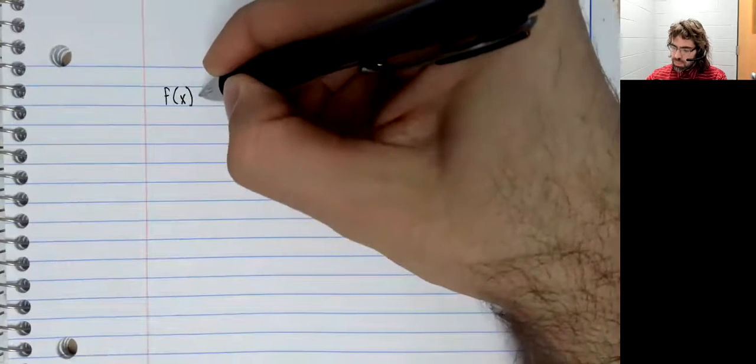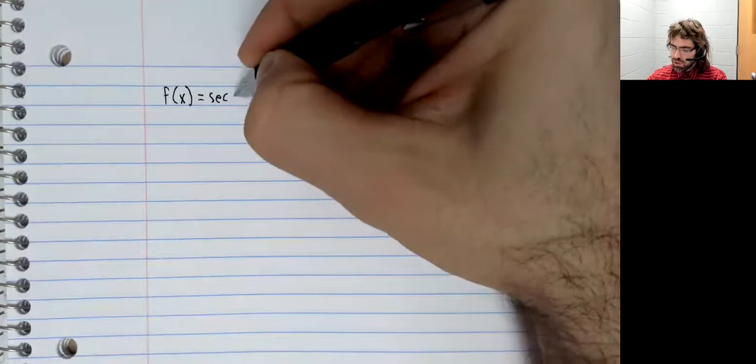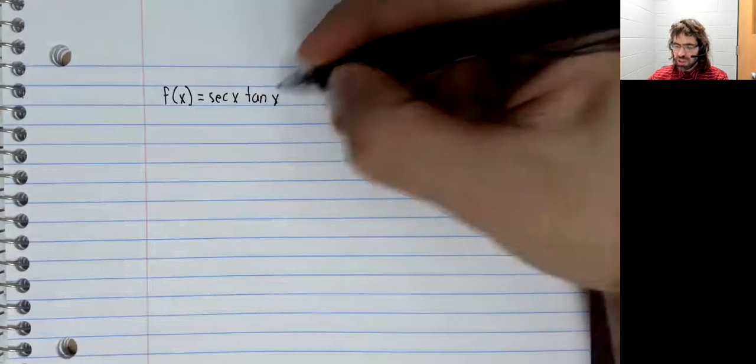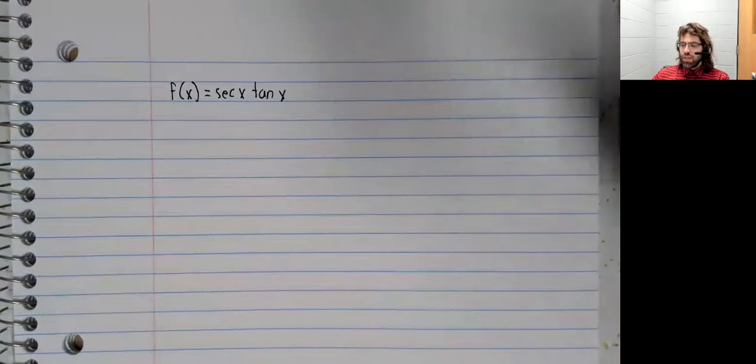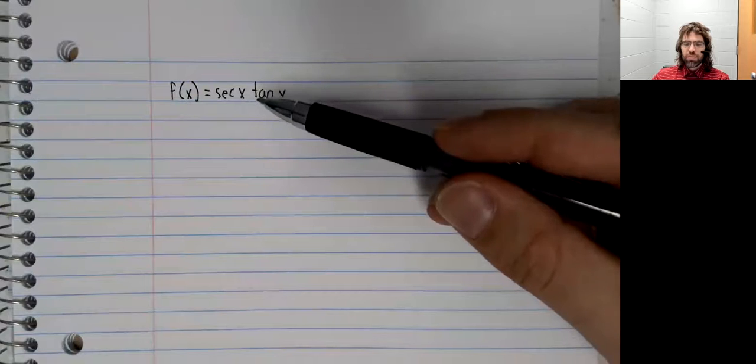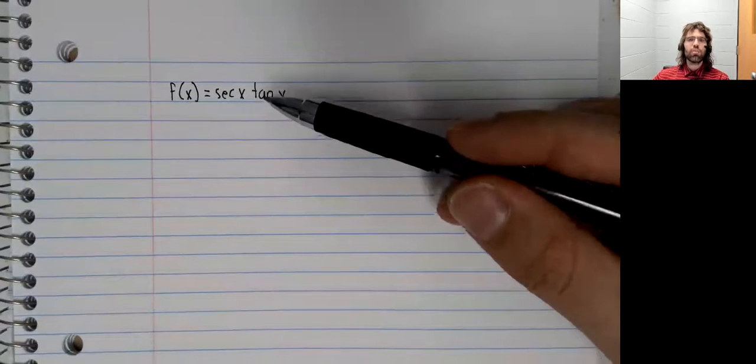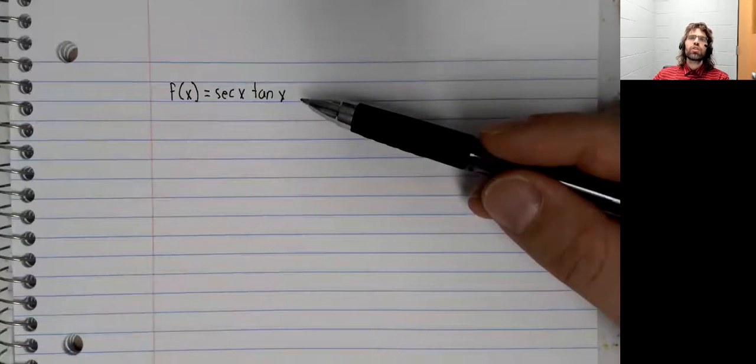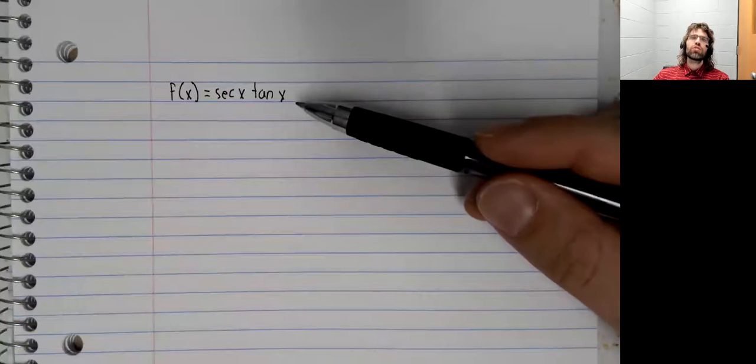We can find antiderivatives if we know a corresponding derivative. So, for example, sec(x) times tan(x). If we want the antiderivative of this, all we can do is cast our mind back and ask ourselves, do we know a function that has this as its derivative?